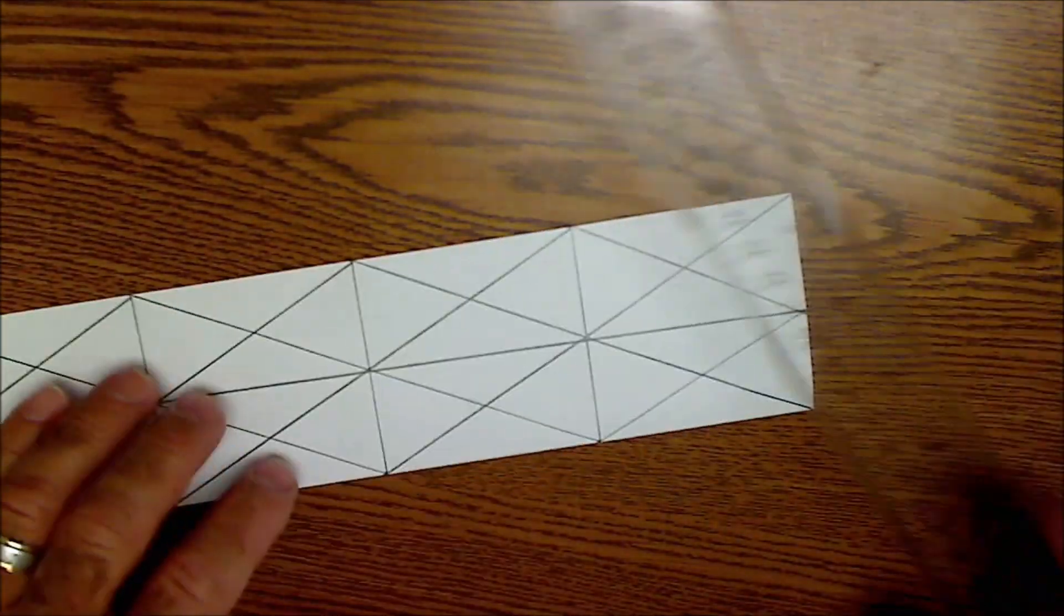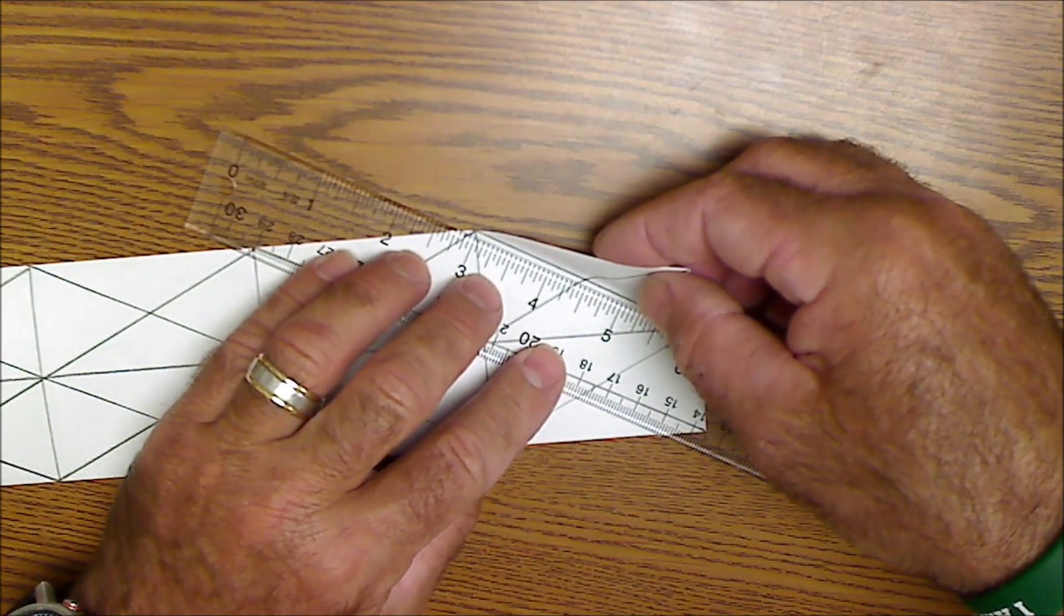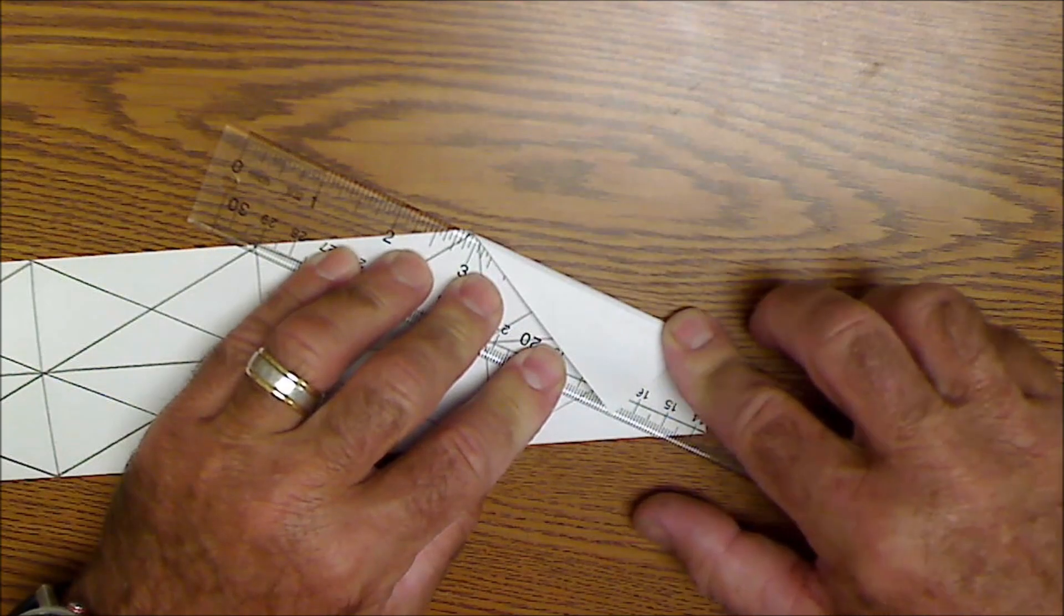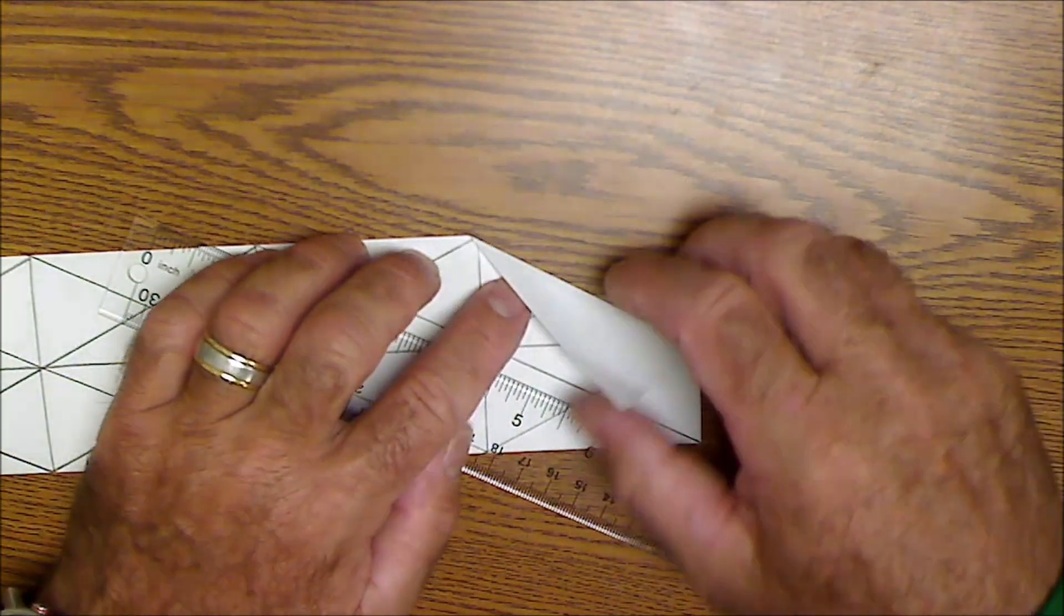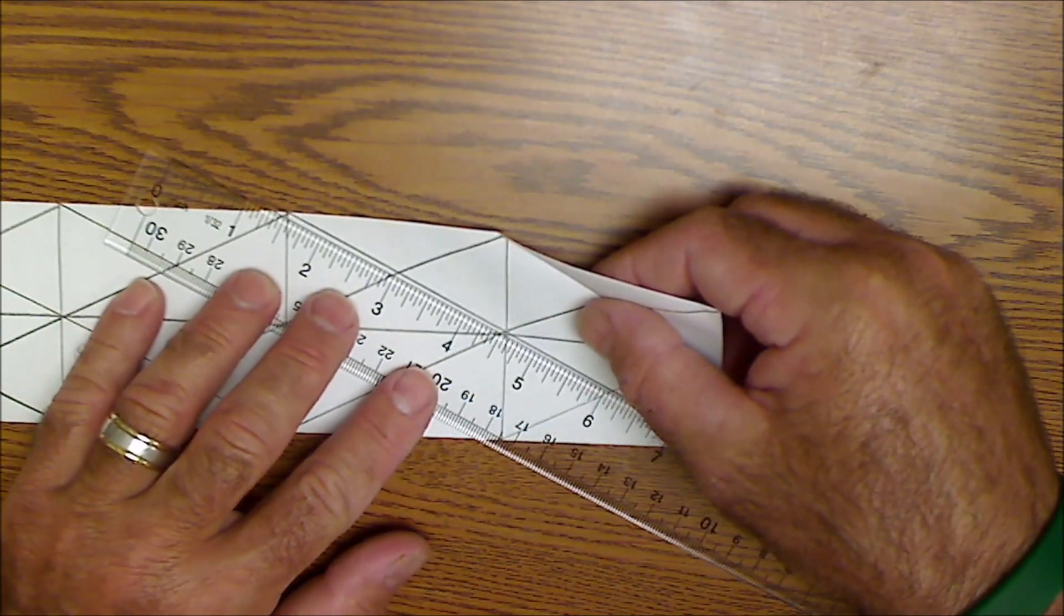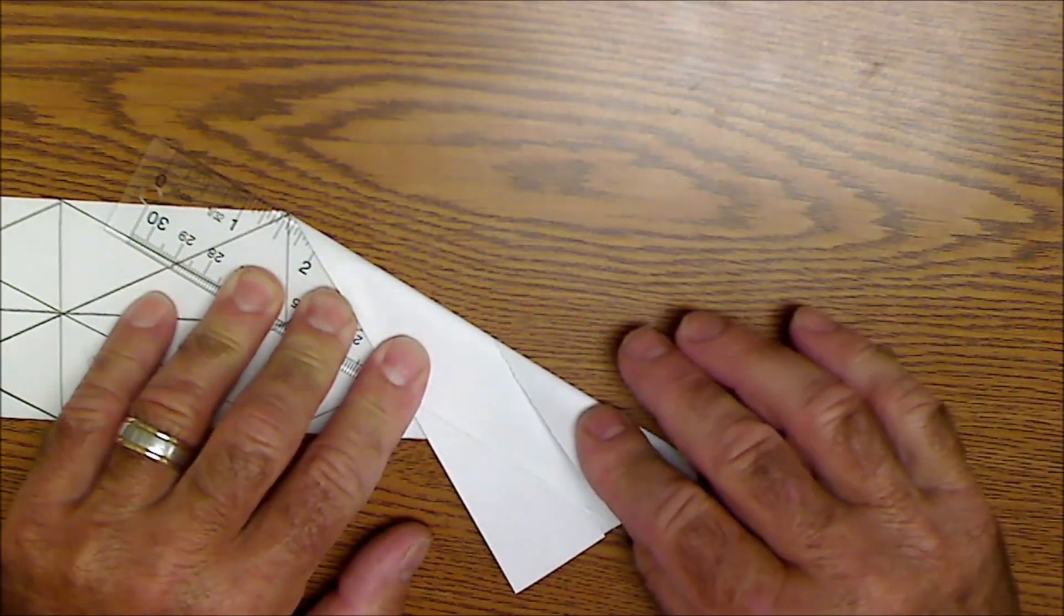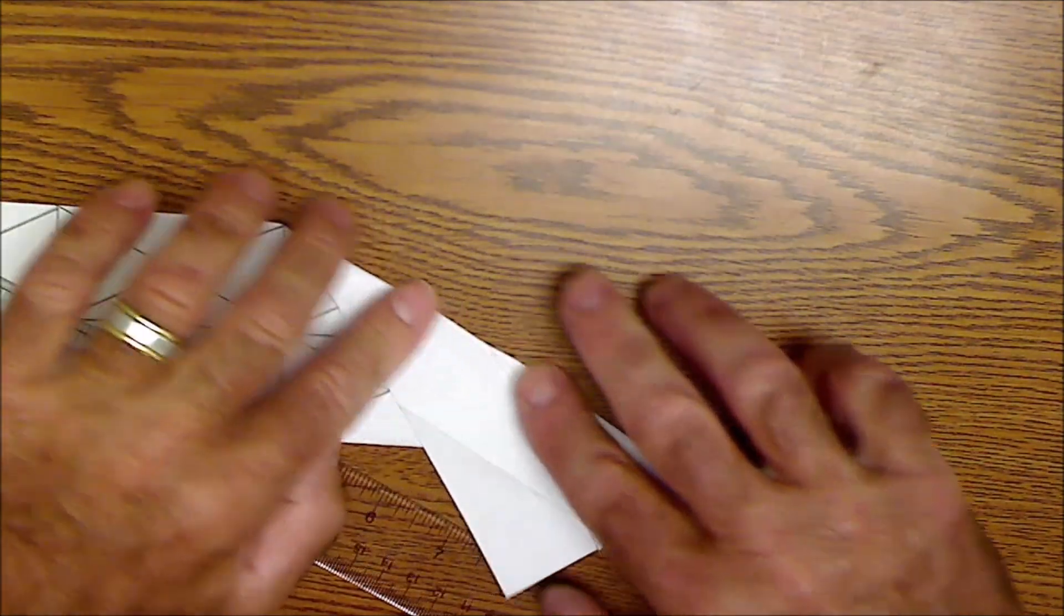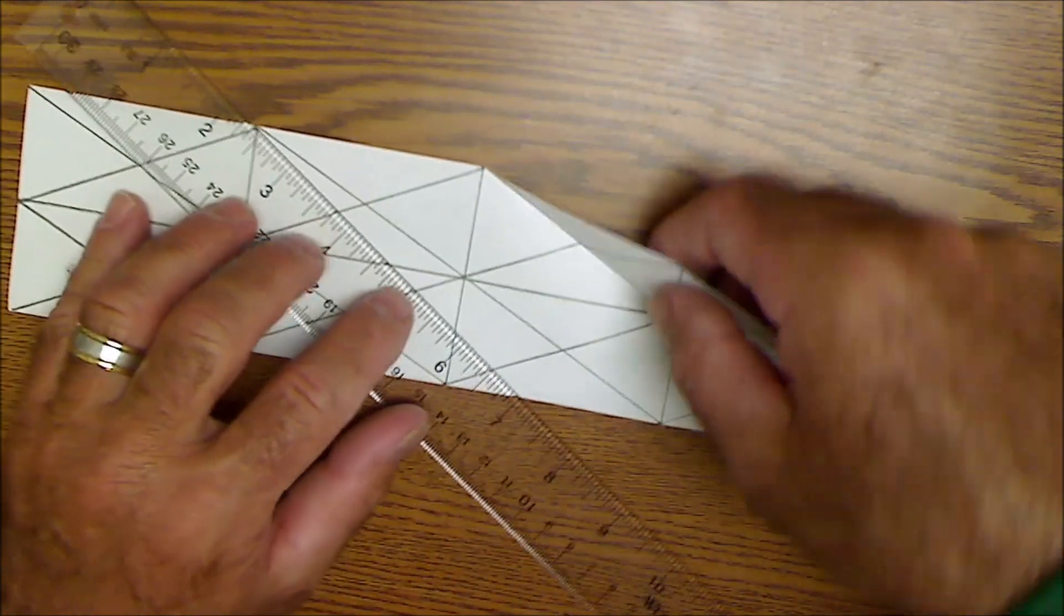Now I'm going to fold these diagonals. I'm just going to fold them up and over. Then after I fold it, I'm going to use my fingernail and get a nice fold line.